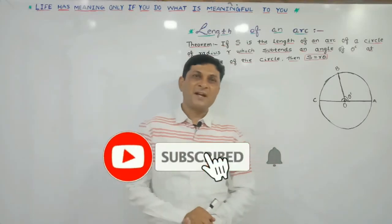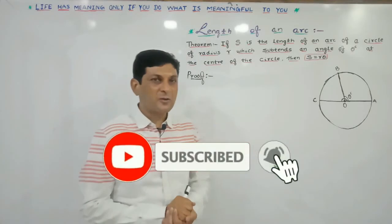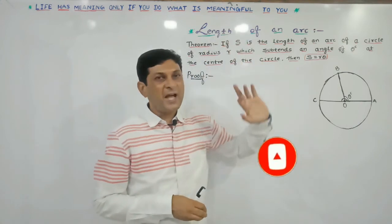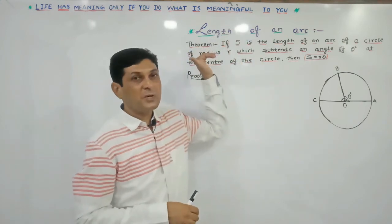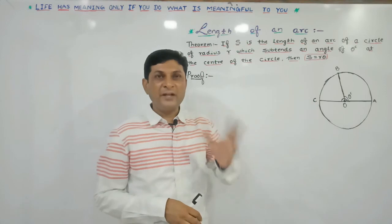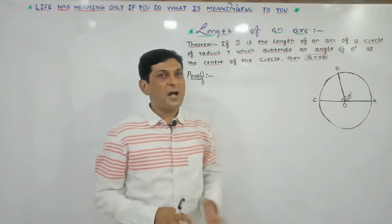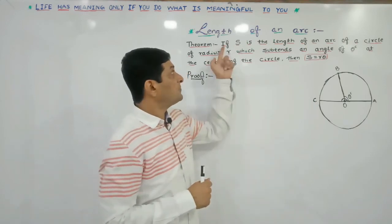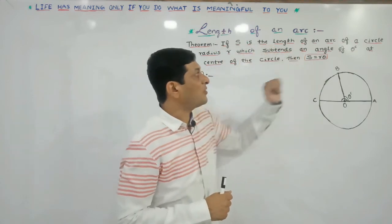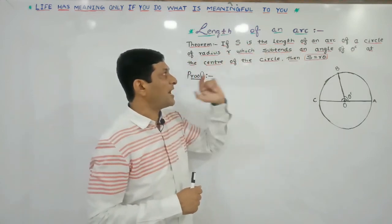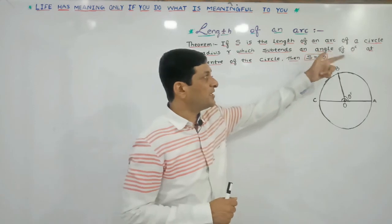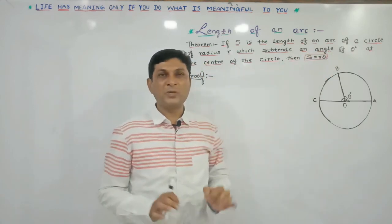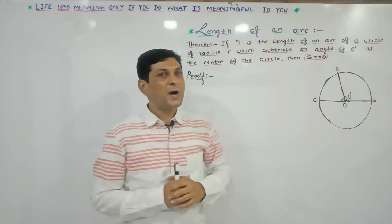Hello friends. Now we are starting the second part of this chapter, that is a formula to find out the length of an arc. This theorem is a formula to find out the length of an arc of a circle. Observe the statement of the theorem: if S is the length of arc of a circle of radius R which subtends an angle of theta radian at the center, then we have to prove that S equals R theta.